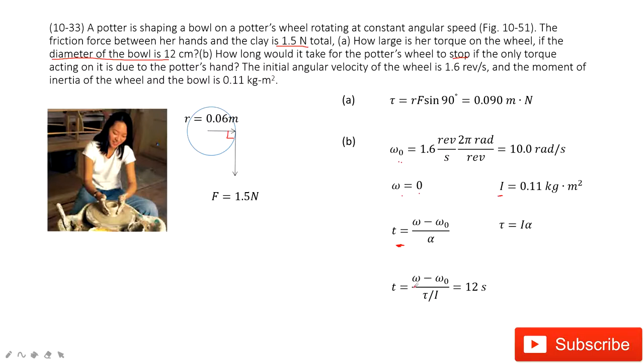In this function, you can see omega is given, omega naught is given, torque is given, I is given. So you can get the time very easily: 12 seconds. Thank you.